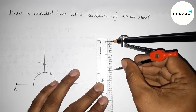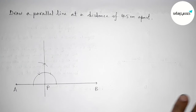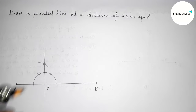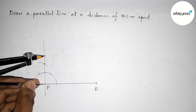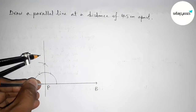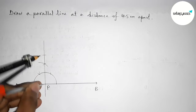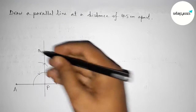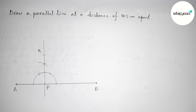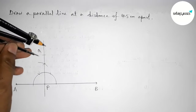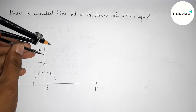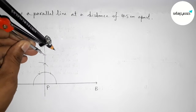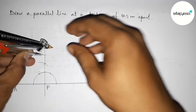Putting the compass on point P and cutting here, we take point Q so that PQ equals 4.5 centimeters. Next we have to draw a 90 degree angle at point Q.